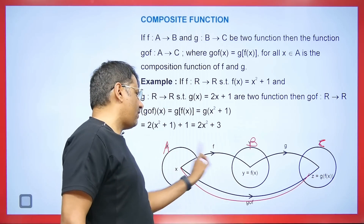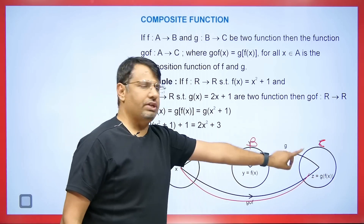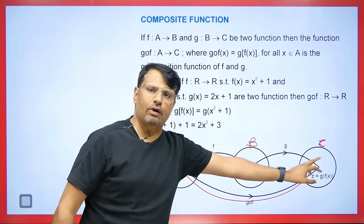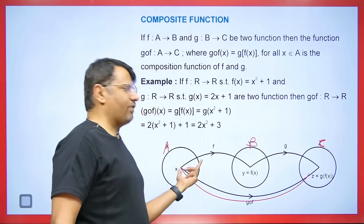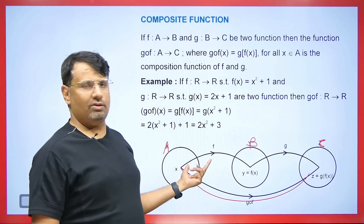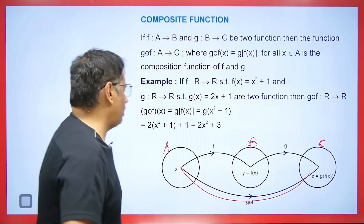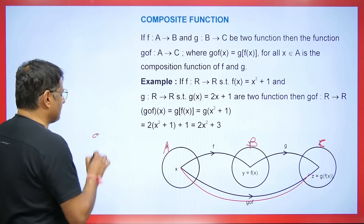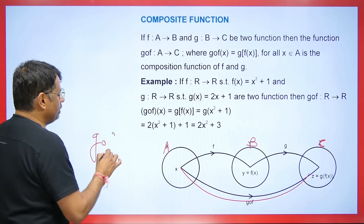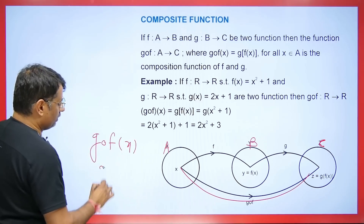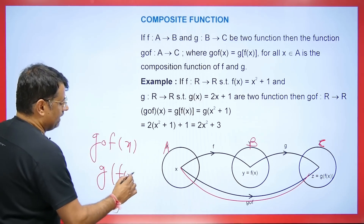G∘F means that this is F and this is G, and the composite function is denoted as G∘F. G∘F(x) means G of F(x). I will show you how to calculate the values for this.